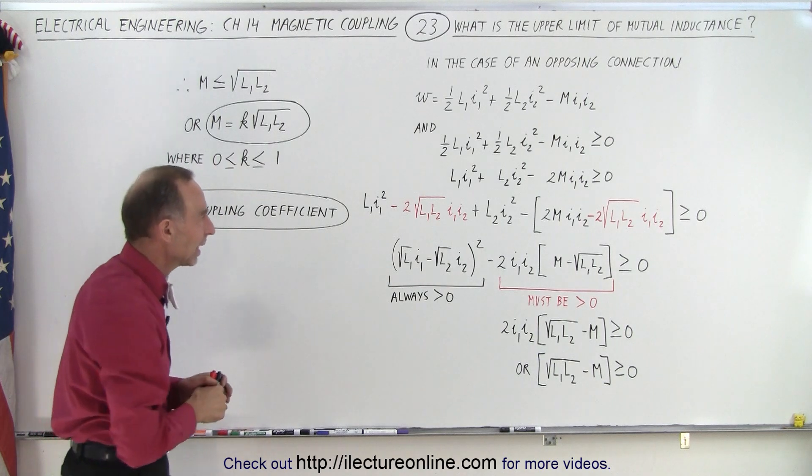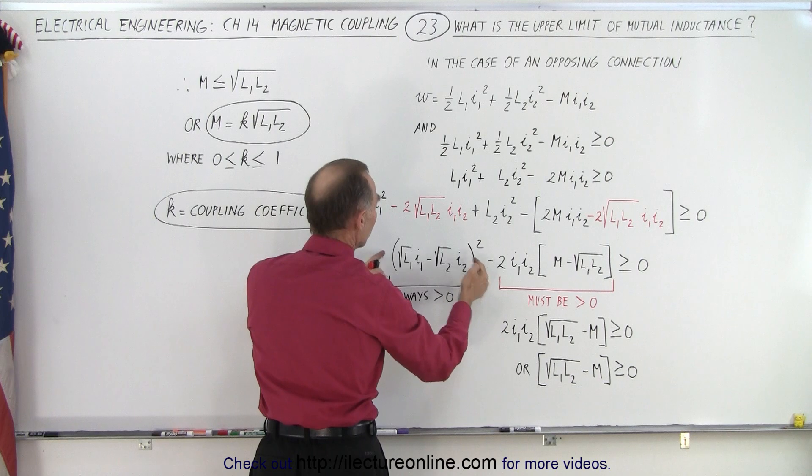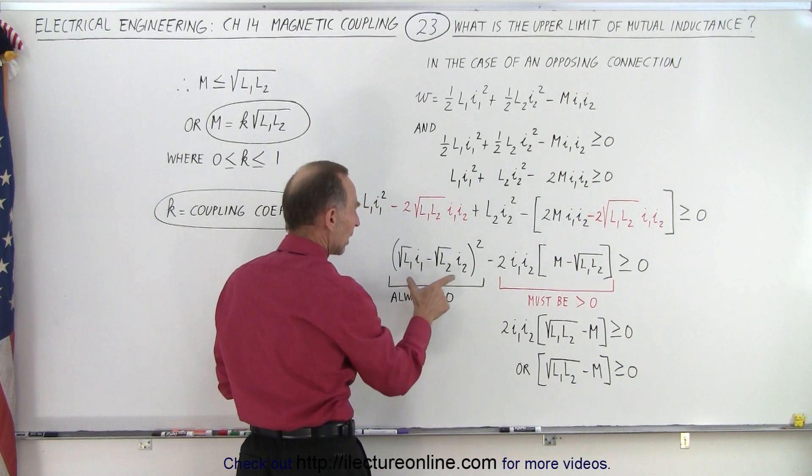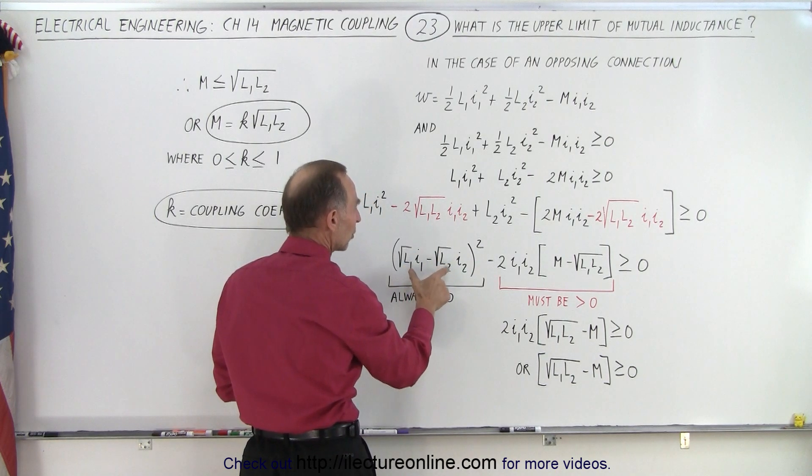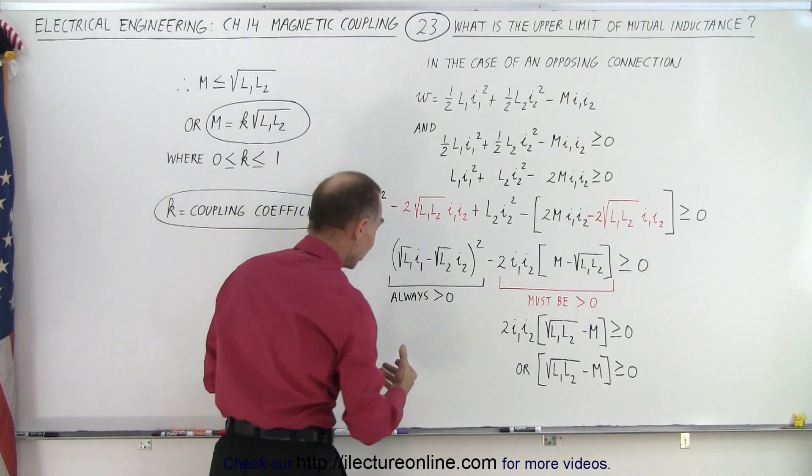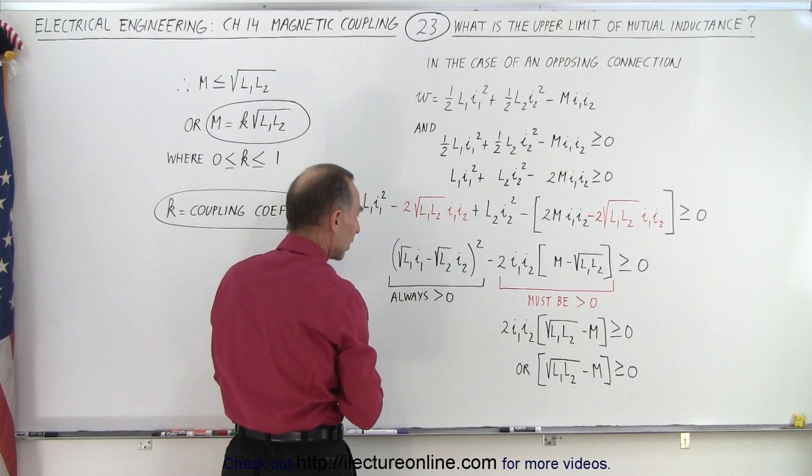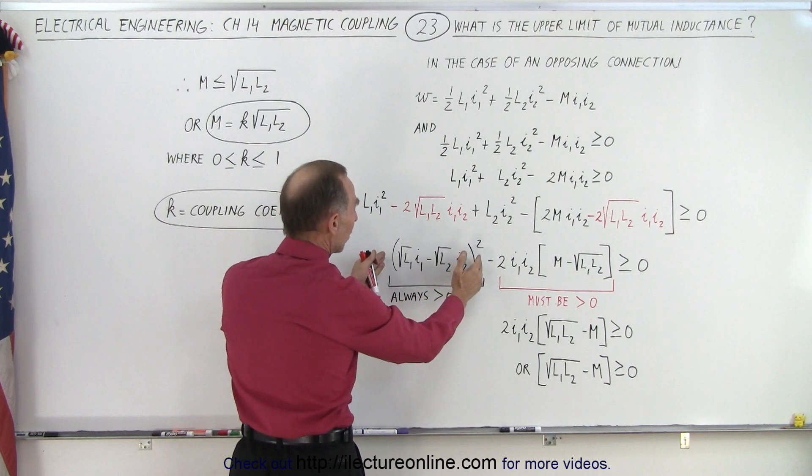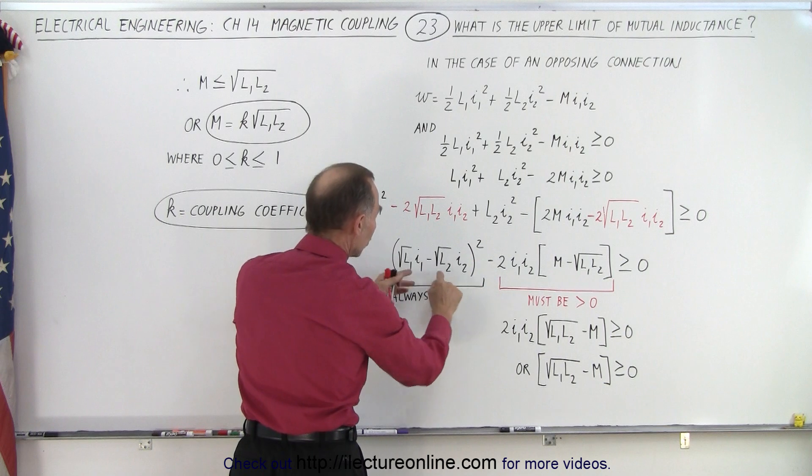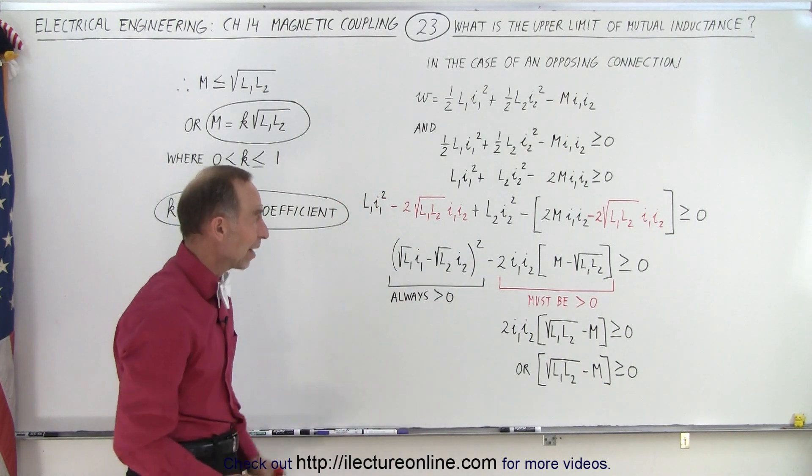An algebra trick so that we can then take these three terms and factor it into a binomial squared. So now that we have this written as a binomial squared, we then go ahead and write it as a binomial squared and notice that since it's now a binomial squared, this whole binomial will always be greater than zero. So that's not the limiting factor.